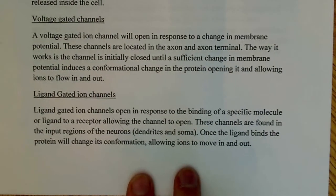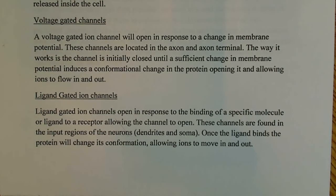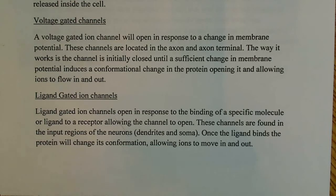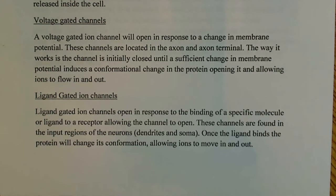The next type is voltage-gated channels. A voltage-gated ion channel will open in response to changes in membrane potential. These channels are located in the axon and the axon terminal. The channel is initially closed until a sufficient change in membrane potential induces a conformational change, opening it and allowing the ions to flow in and out. It all comes back to the same things we've talked about with proteins.